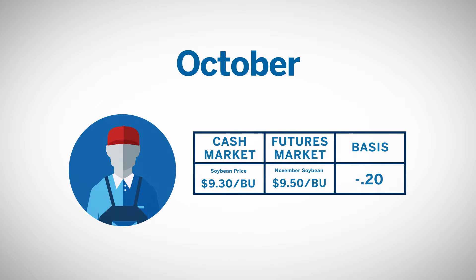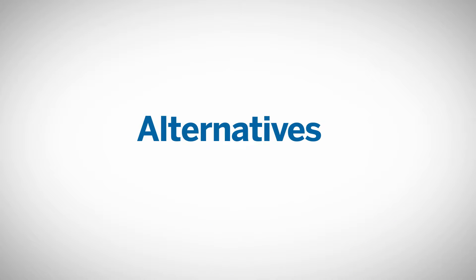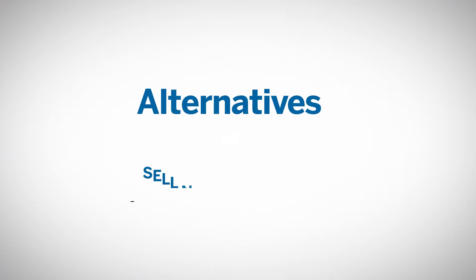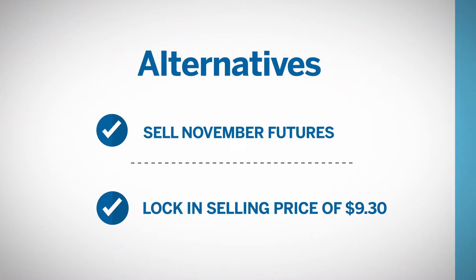The producer has determined that a selling price of $9.30 will allow his operations to be profitable. One alternative is to lock in the selling price of $9.30 with a short futures hedge by selling November futures at $9.50.